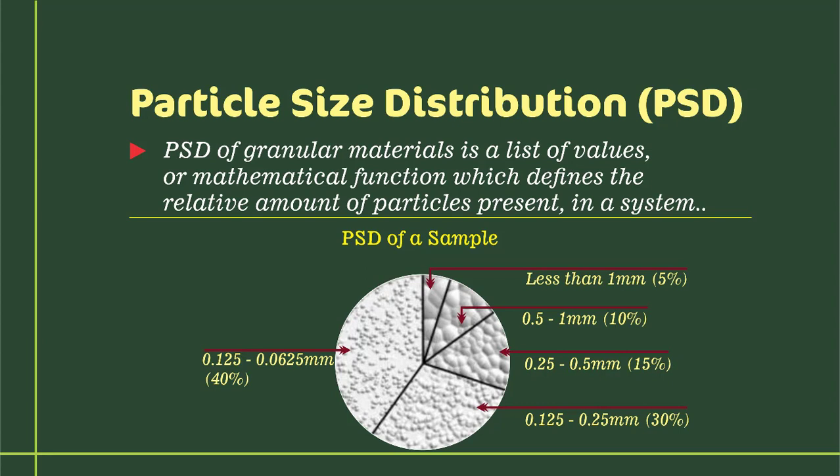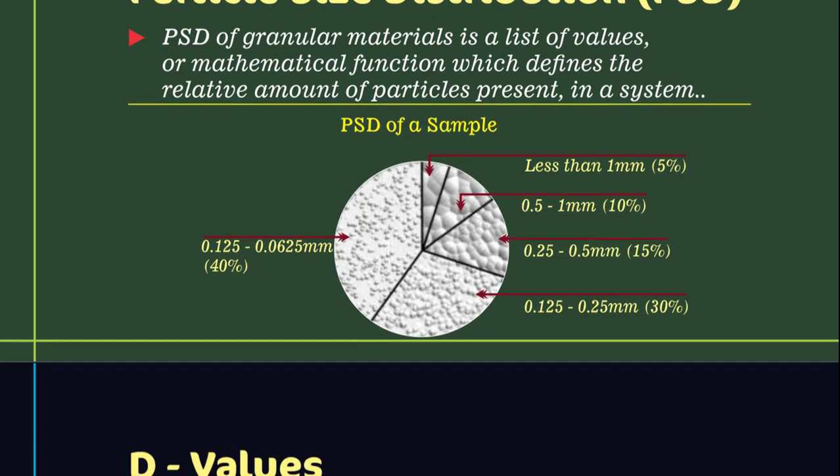We have about 40% which are far less than 0.5mm and so on. The distribution here are calculated mostly by using the D-values technique.